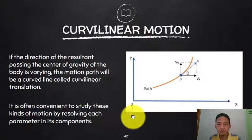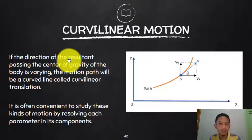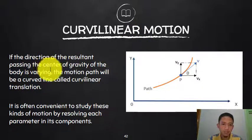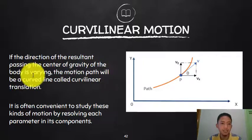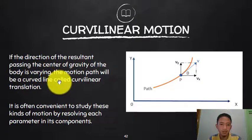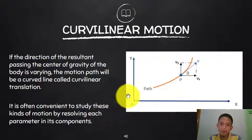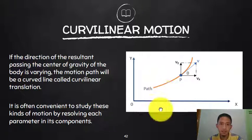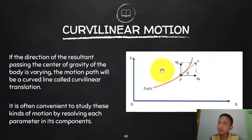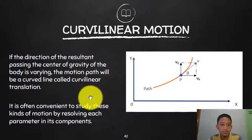What is curvilinear motion? If the direction of the resultant passing the center of gravity of the body is varying, the motion path will be a curved line — called curvilinear translation. Simply put, if your path of motion is a curved surface, it belongs to curvilinear motion. Recall that rectilinear motion is just a linear path.